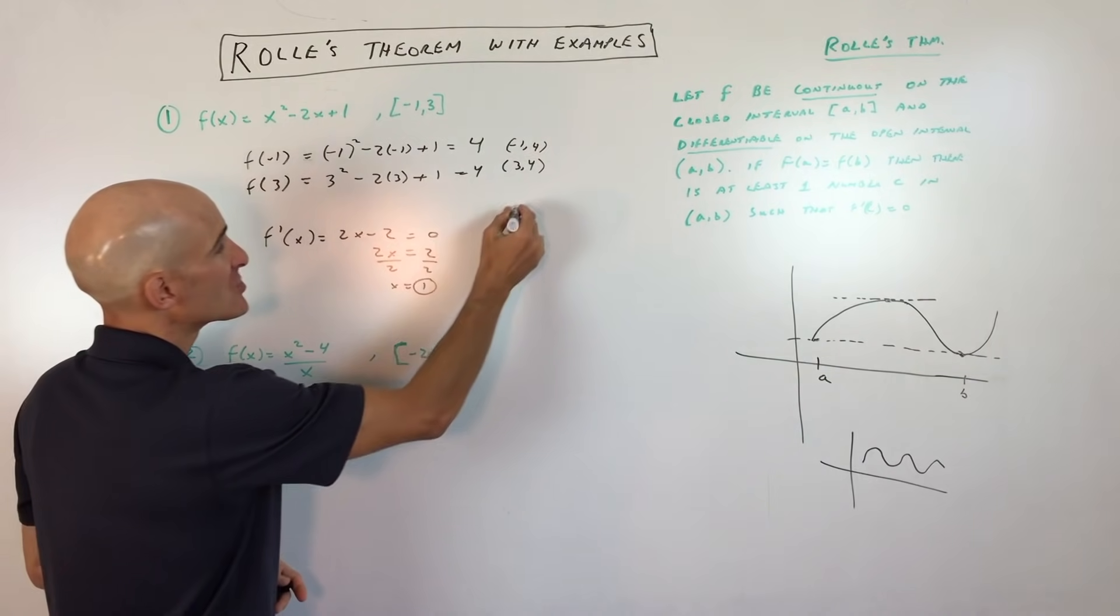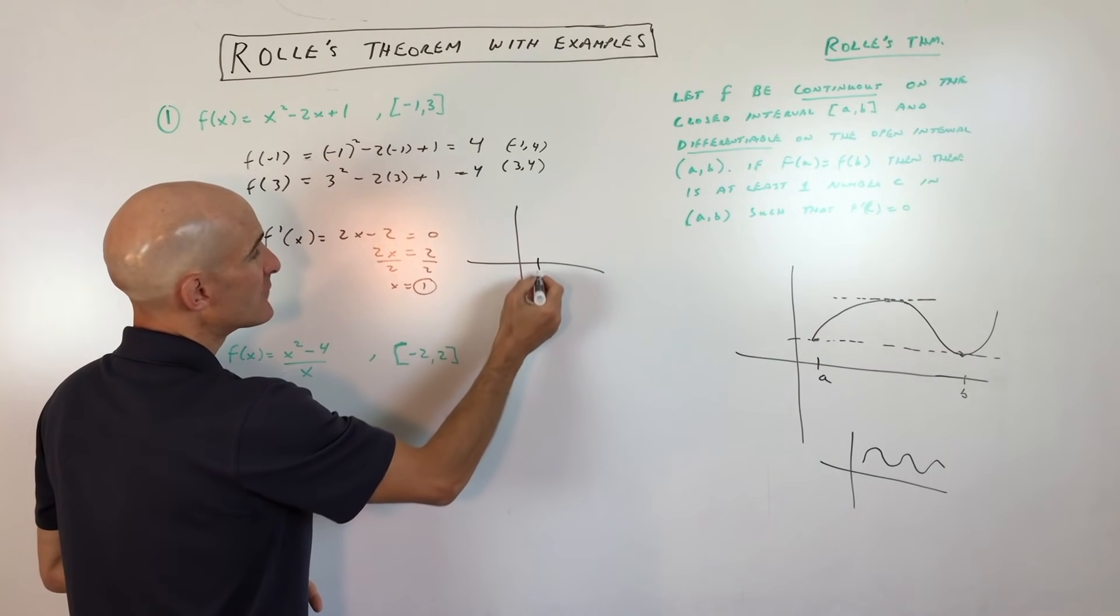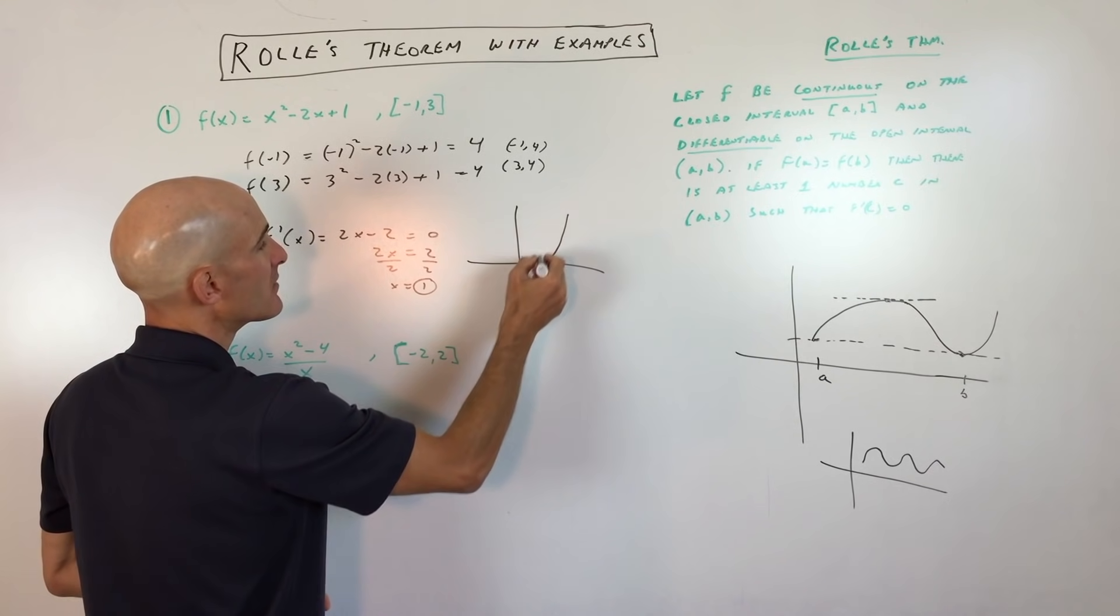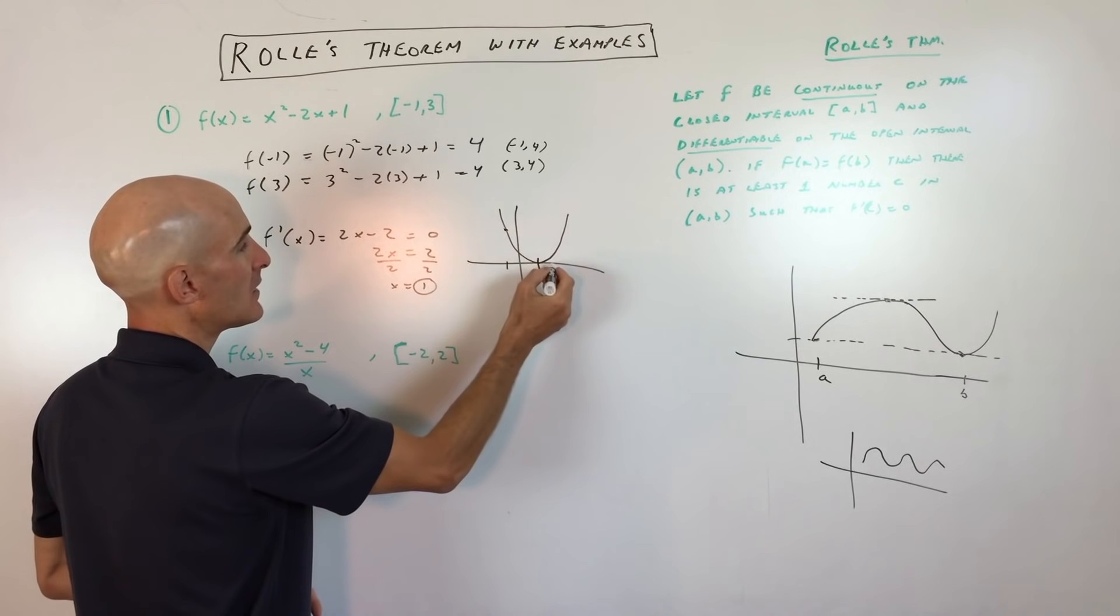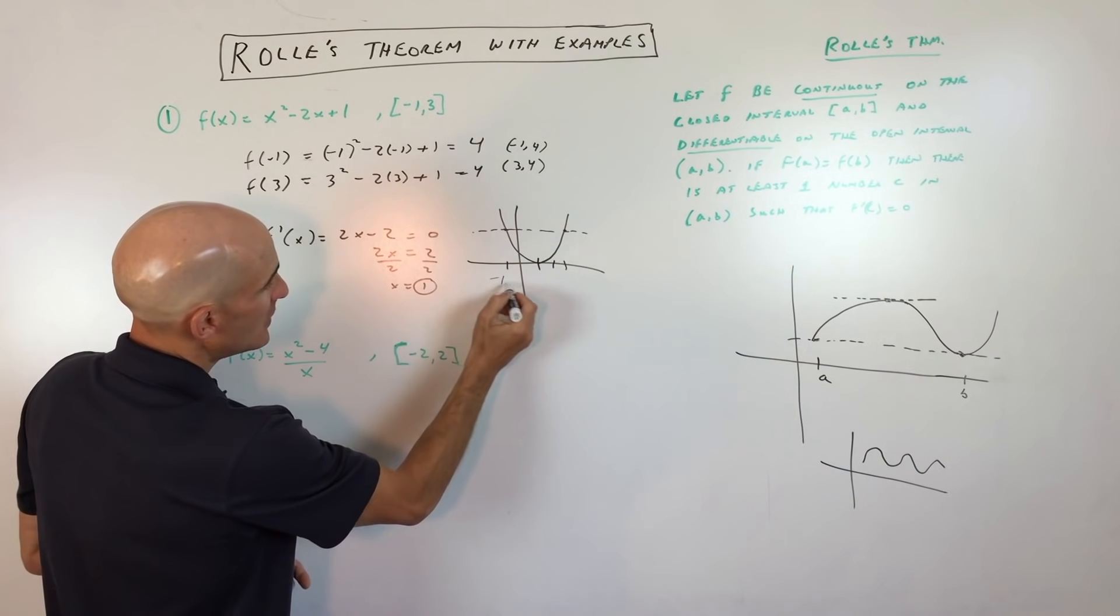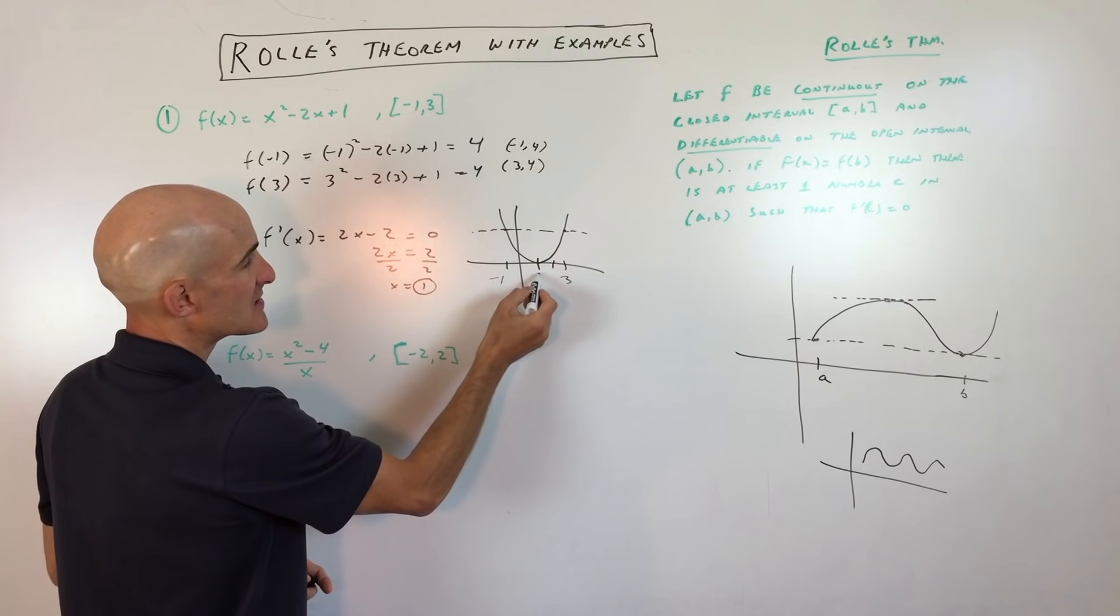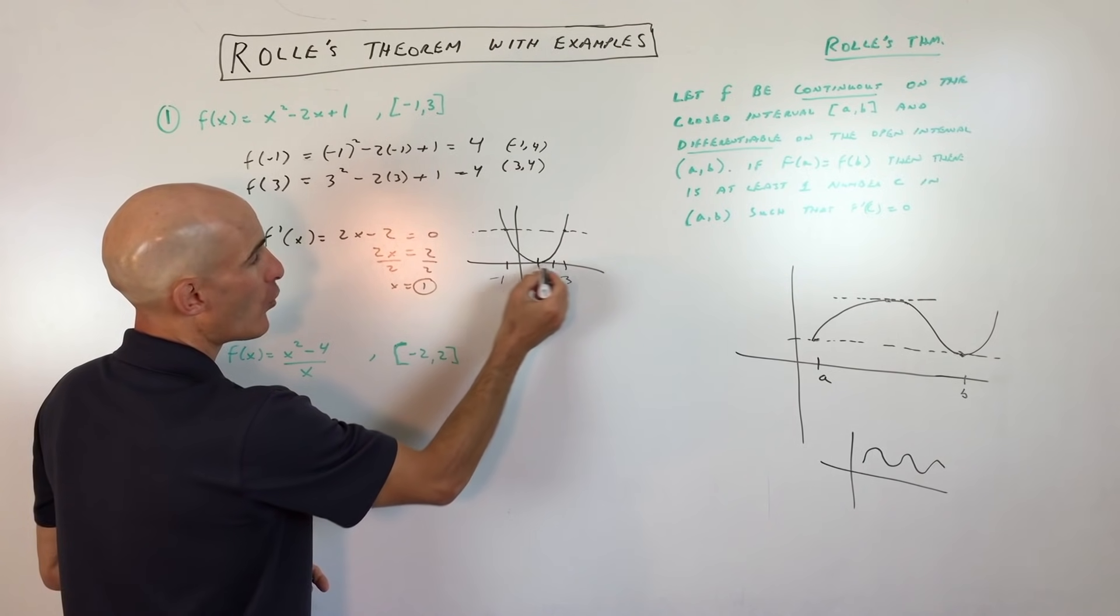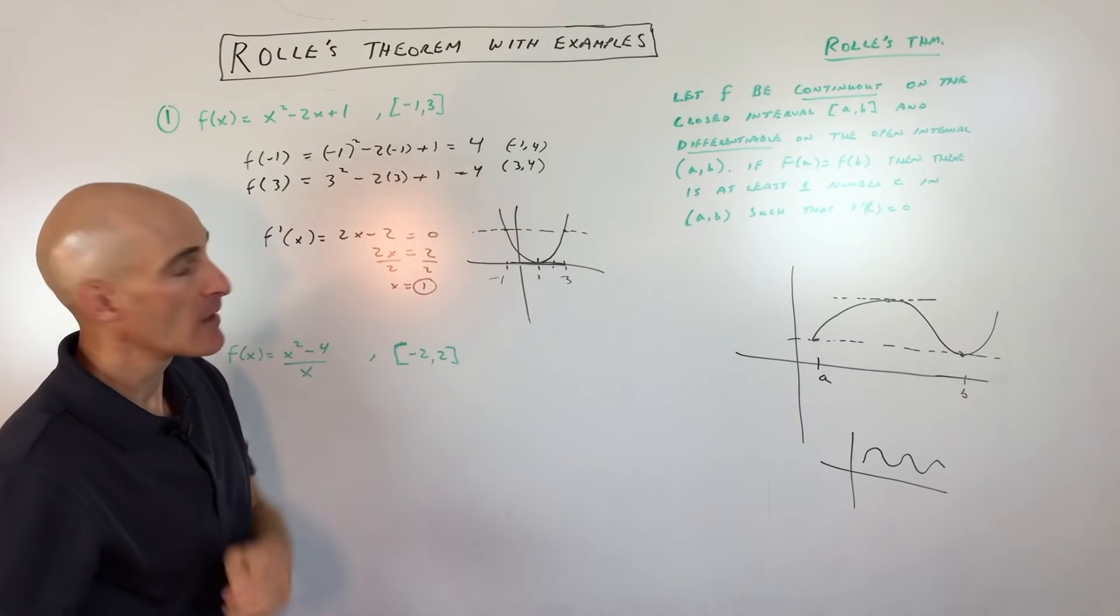If you want to graph this just to understand it a little bit better, this is actually a parabola that's been shifted right 1. So it looks something like this. And so over here, we have negative 1 comma 4. That's this point. And we have 3 comma 4. That's this point. You can see that they're at the same height.